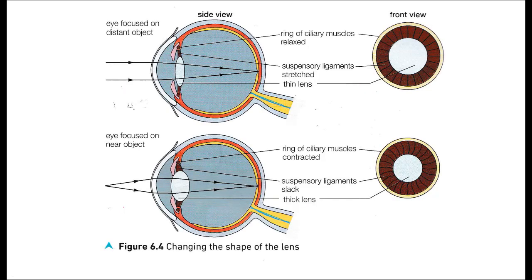This diagram shows that although in a cross-section it looks like the ciliary muscles and suspensory ligaments are only at the top and bottom, if you spin the eye around you'd see that both the ciliary muscles and suspensory ligaments go all the way around the lens.